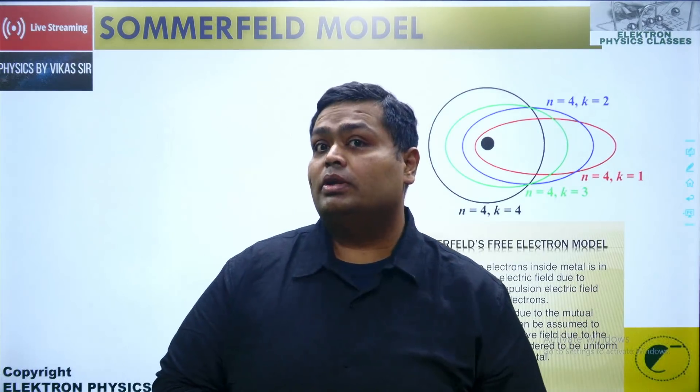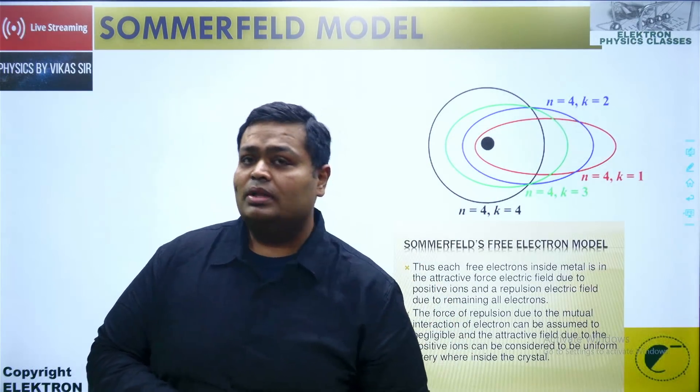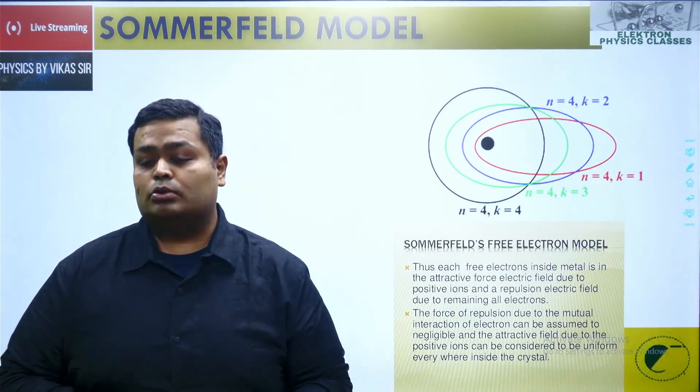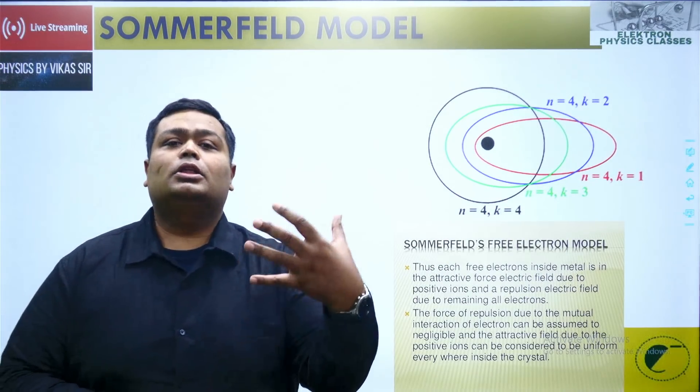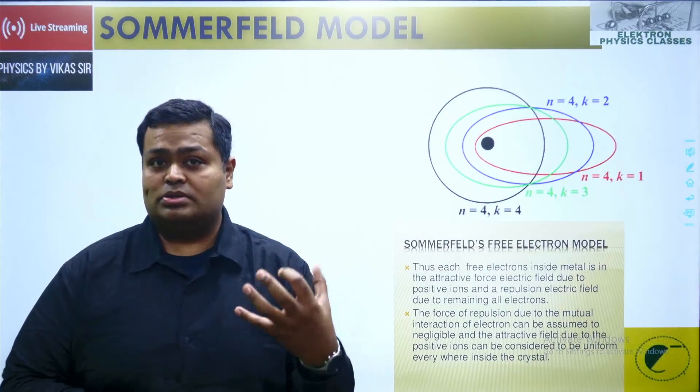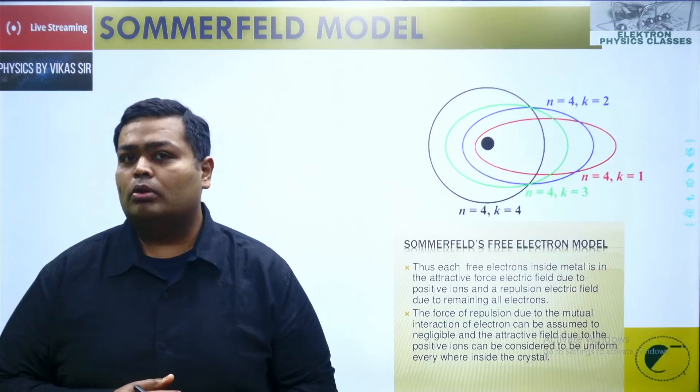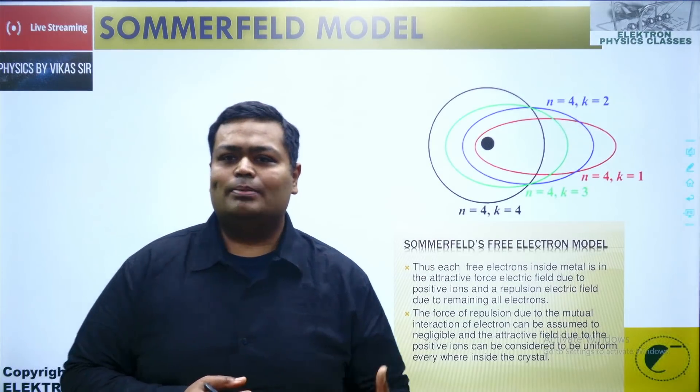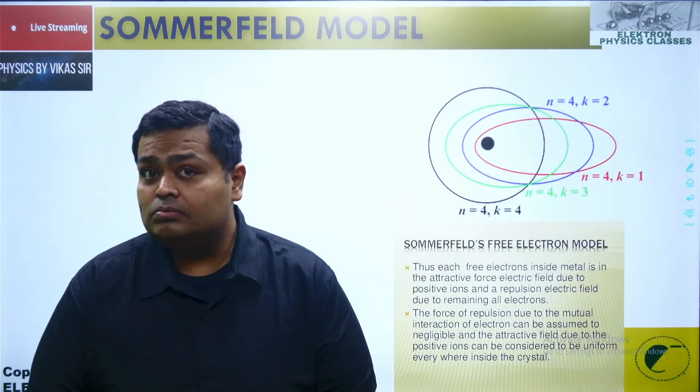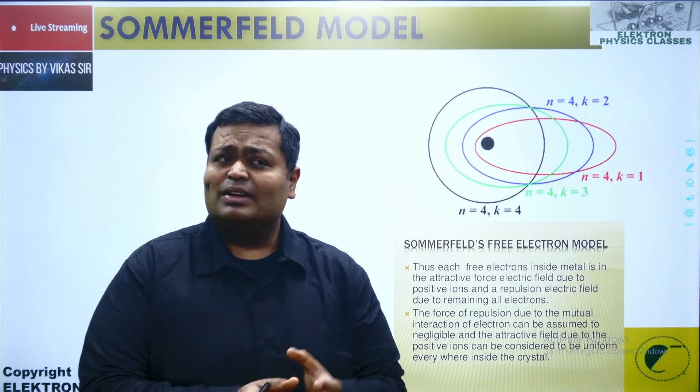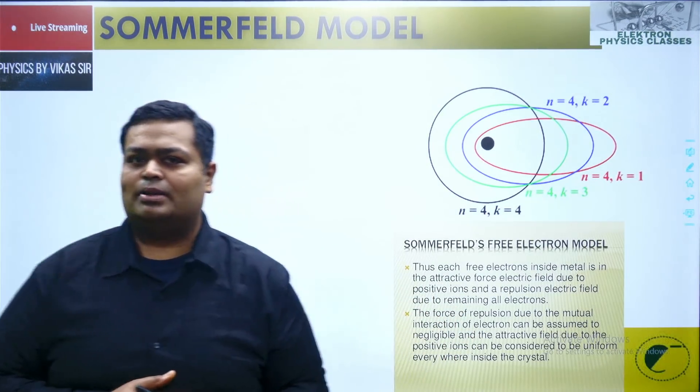Do remember that Niels Bohr's theory was only for the single electron model and this particular model is based upon the free electron model. Of course later on Sommerfeld also explained that the positive attractive force because of the nucleus is kind of uniform on all the electrons nearby, but it should not be because the distances are different. And second, the mutual repulsion between the electrons can be neglected. Of course we do understand that part.